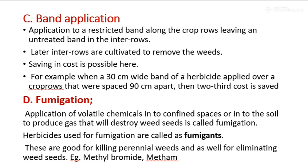Fourth is fumigation — the application of volatile chemicals into a confined space or into the soil to produce a gas that will destroy the weeds and weed seeds. Herbicides used for fumigation are called fumigants. These are good for killing perennial weeds and for eliminating weed seeds. For example, methyl bromide.